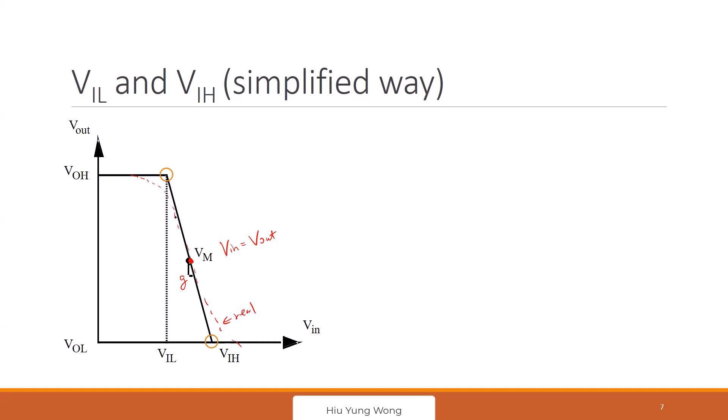So I approximate it as this, a piecewise curve. And actually, I will feel that the turning points VIL and VIH are pretty close to this, the point, this turning point, right? So how do I find it? Then it becomes easy.